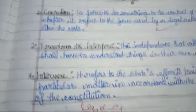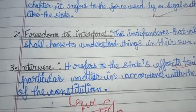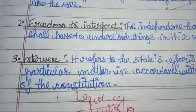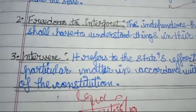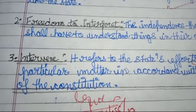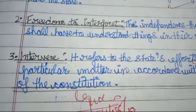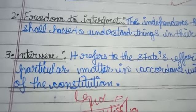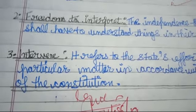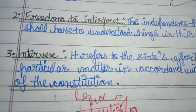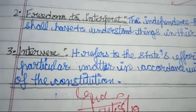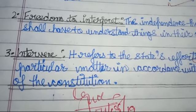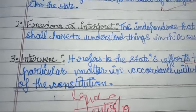The third definition is intervening. In the context of this chapter, it refers to the state's efforts to influence a particular matter in accordance with the principles of the constitution.